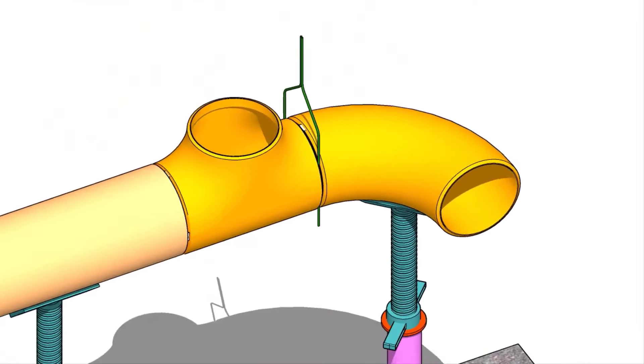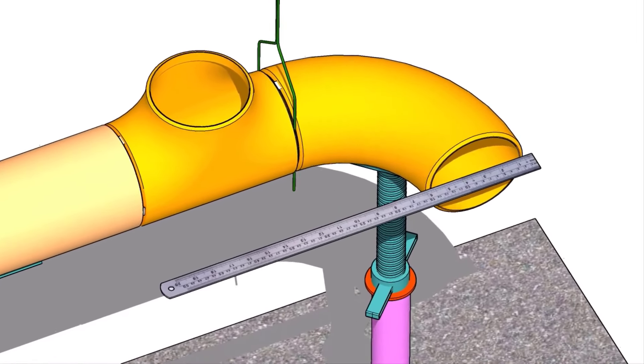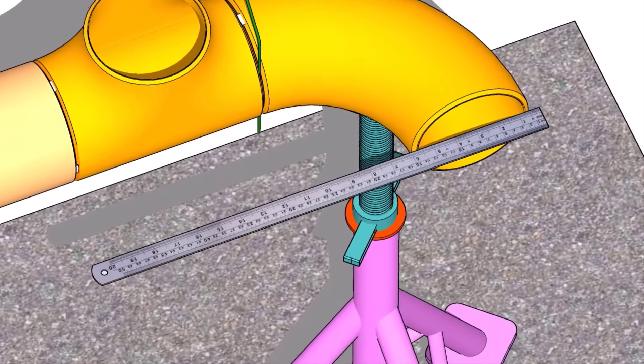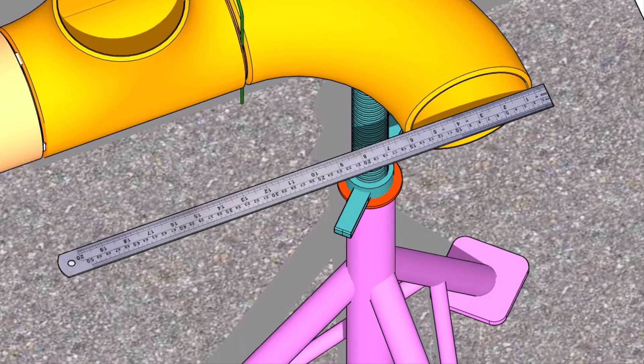Now, put a scale on the face of the elbow horizontally. Check the distance between the scale and the side of the tee at its ends as shown.